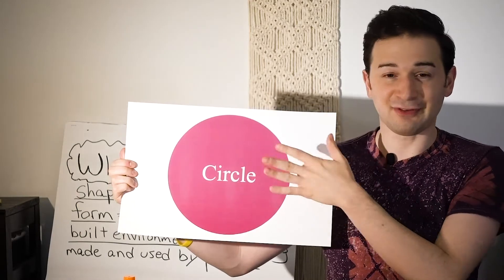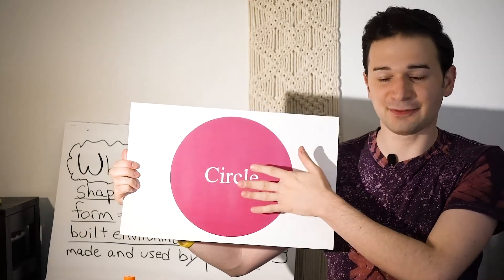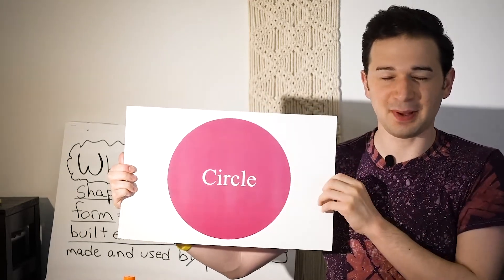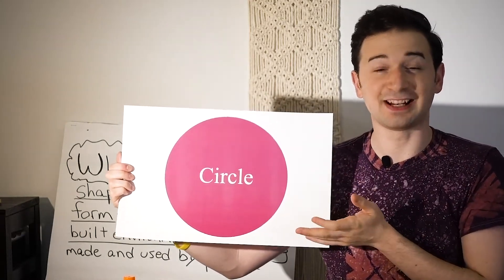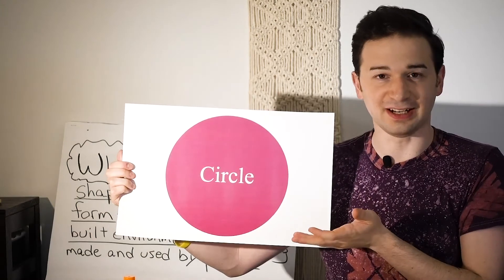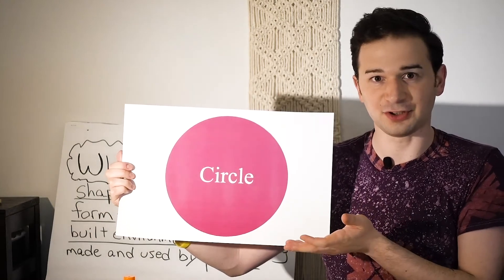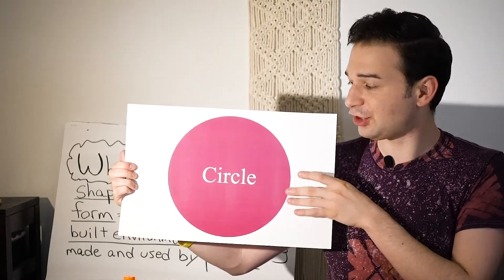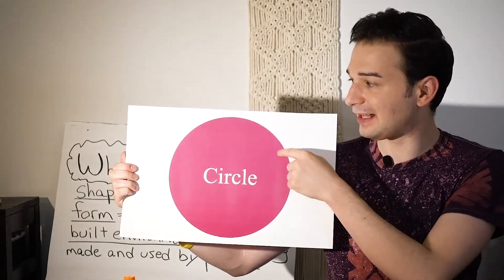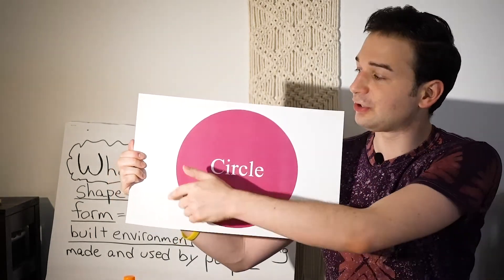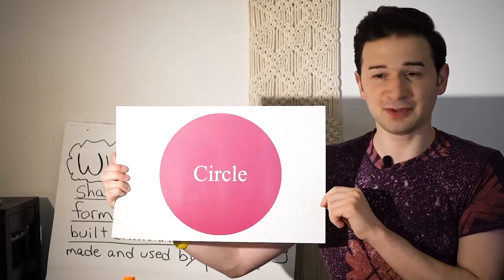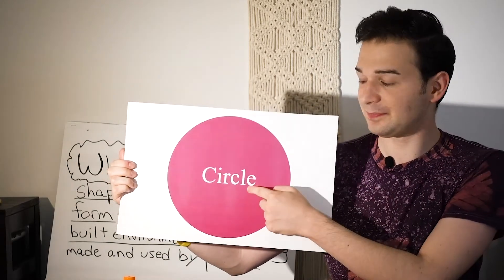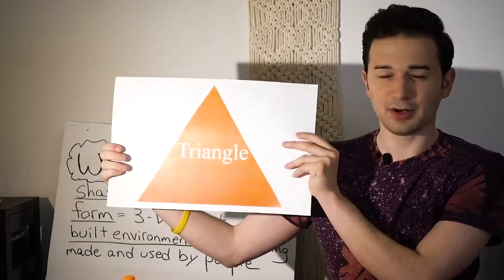A shape is flat — flat on a piece of paper — so we could say that it's 2D, or two-dimensional. This shape that is made of one long curved line that's flat on the paper, this one is a circle.